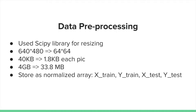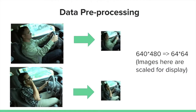The original data are not perfect for model training due to the large size. So we use the SciPy library to resize the images from 640x480 pixels to 64x64 pixels. In this way, the storage size of each image reduces from 40KB to 1.8KB, and the total dataset size is reduced from 4GB to 33.8MB. This visualization shows our data preprocessing. The images here are at 4x scale display, so they are not their exact size. We also turned the rectangular images into square ones for more convenient model training.